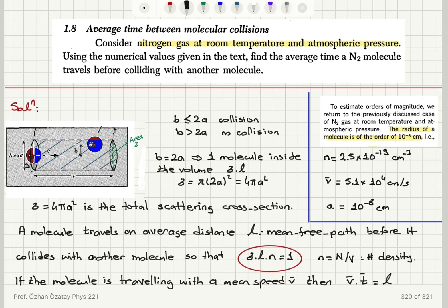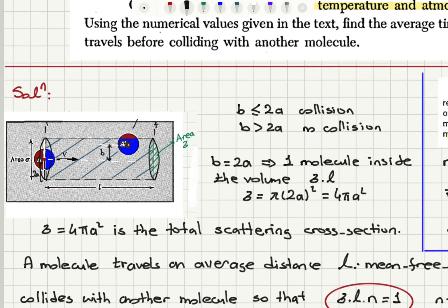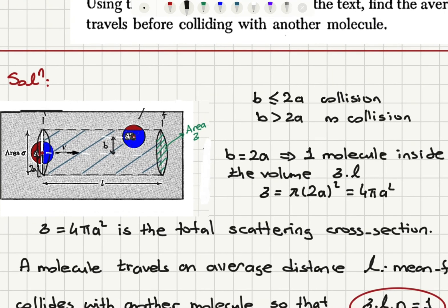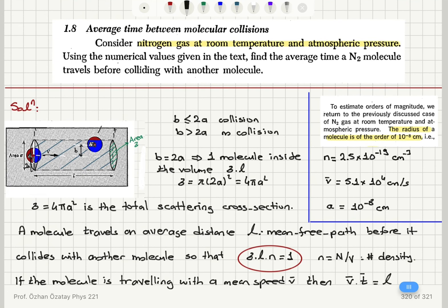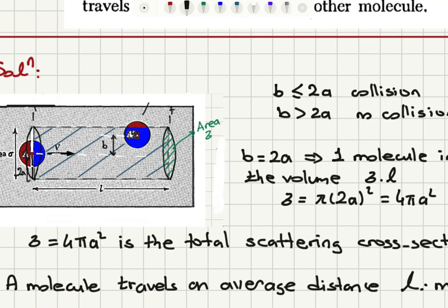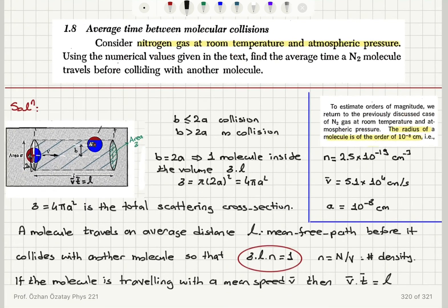To recap: we are considering nitrogen gas at room temperature and atmospheric pressure. The critical condition for a collision is that the total scattering cross-section times the mean free path — the volume of the imaginary cylinder — must contain exactly one molecule. Half of molecule A is already inside, so we need at least half of the other molecule inside, which is equivalent to saying the center-to-center distance B ≤ 2a. Therefore σ × L × n = 1.